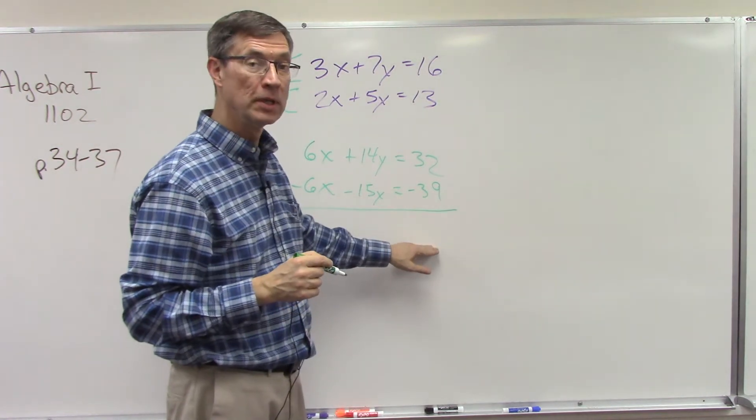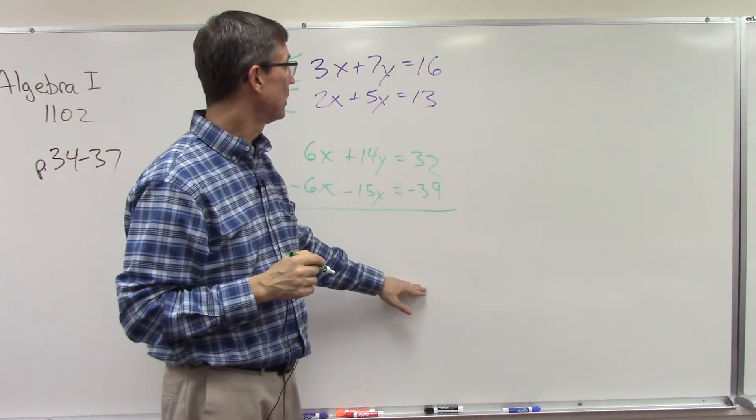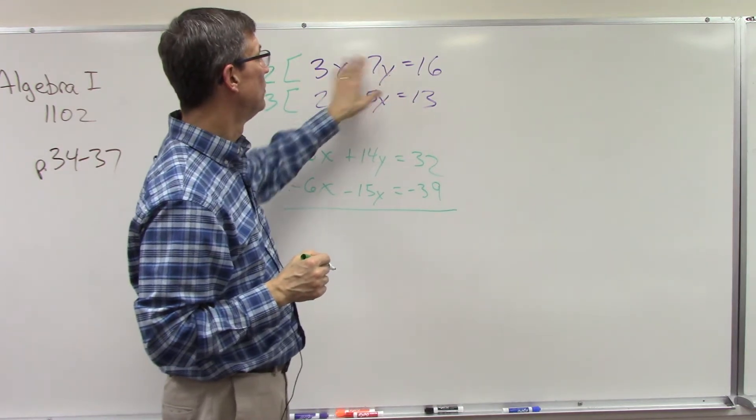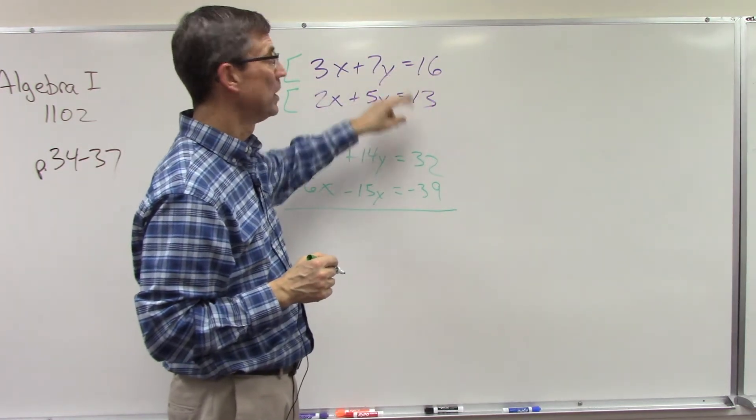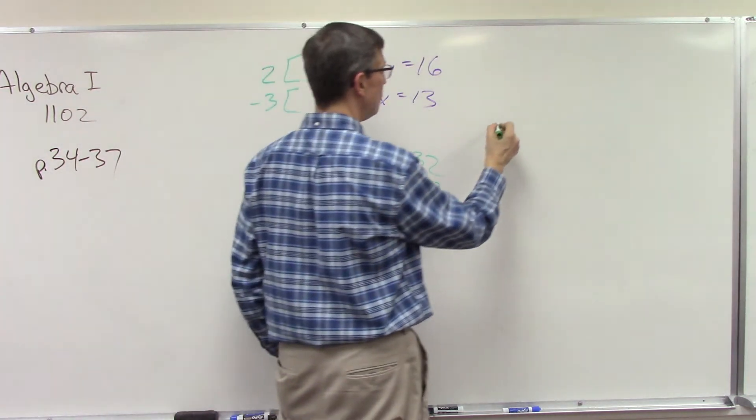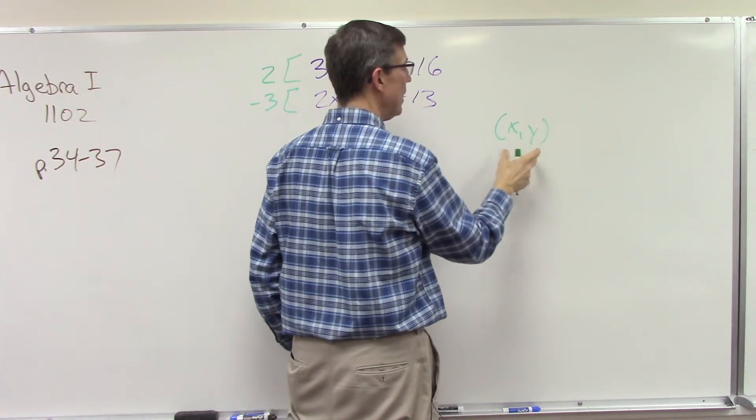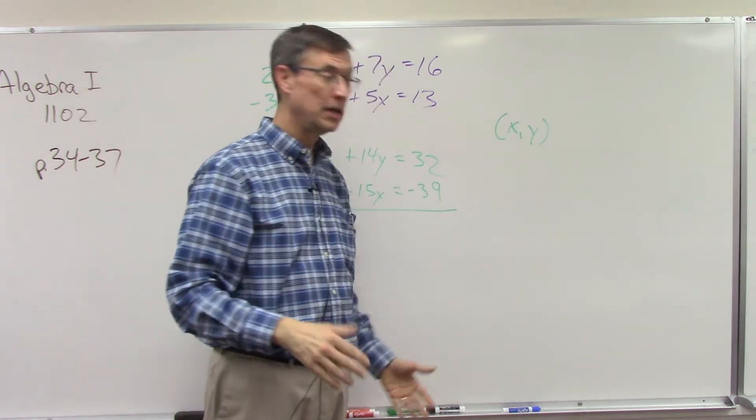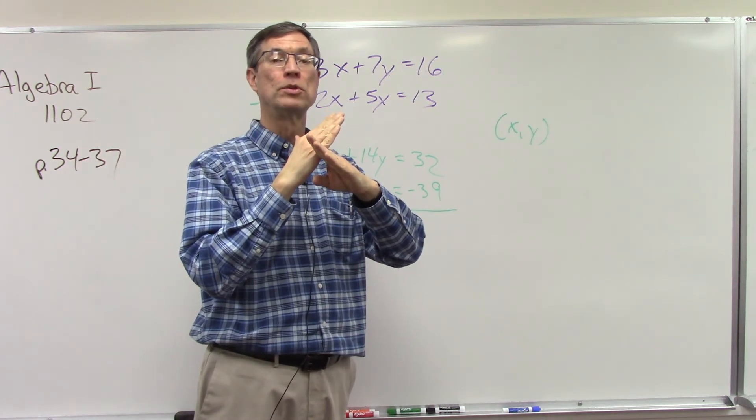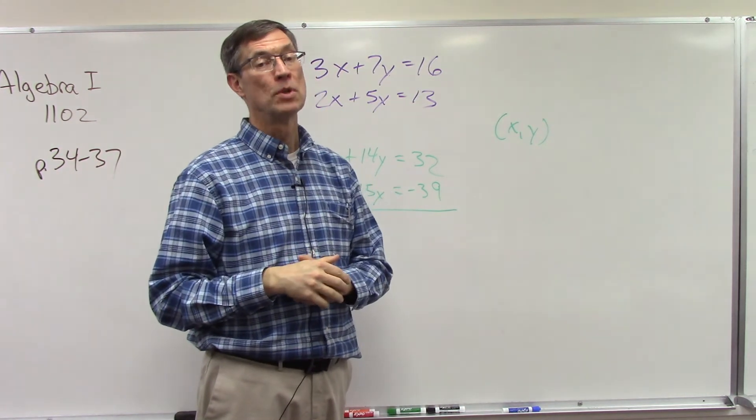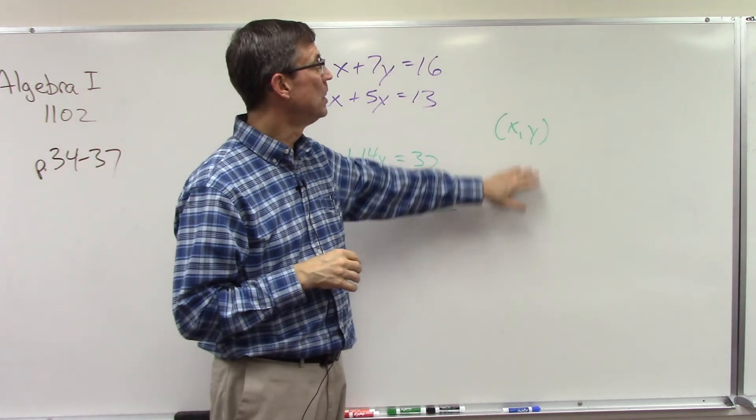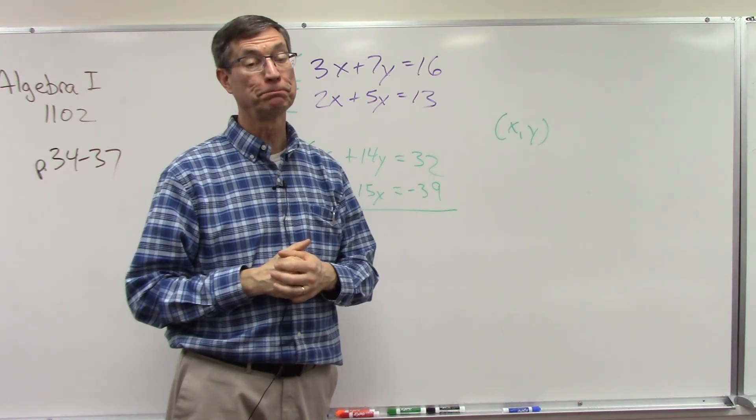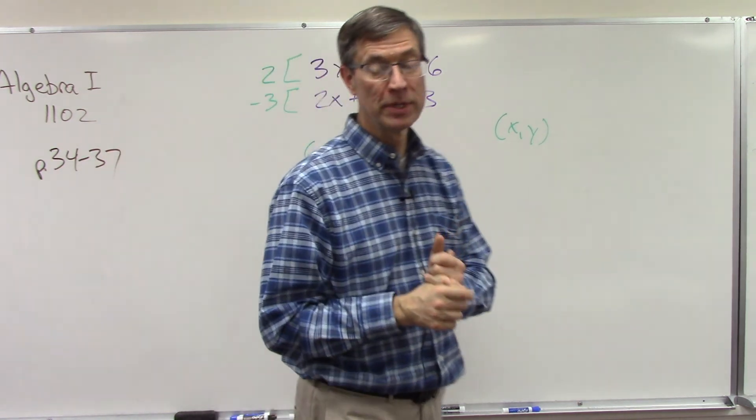Every time you're going to end up with an x and a y value as your answer. It's an ordered pair, and just to remind you, it goes back to the idea that it could have been graphed and it'd be a point where the two lines cross. That's why we give an x and a y value that whatever numbers you come up with could satisfy both equations. Hopefully you do well with that and with the upcoming checkup.